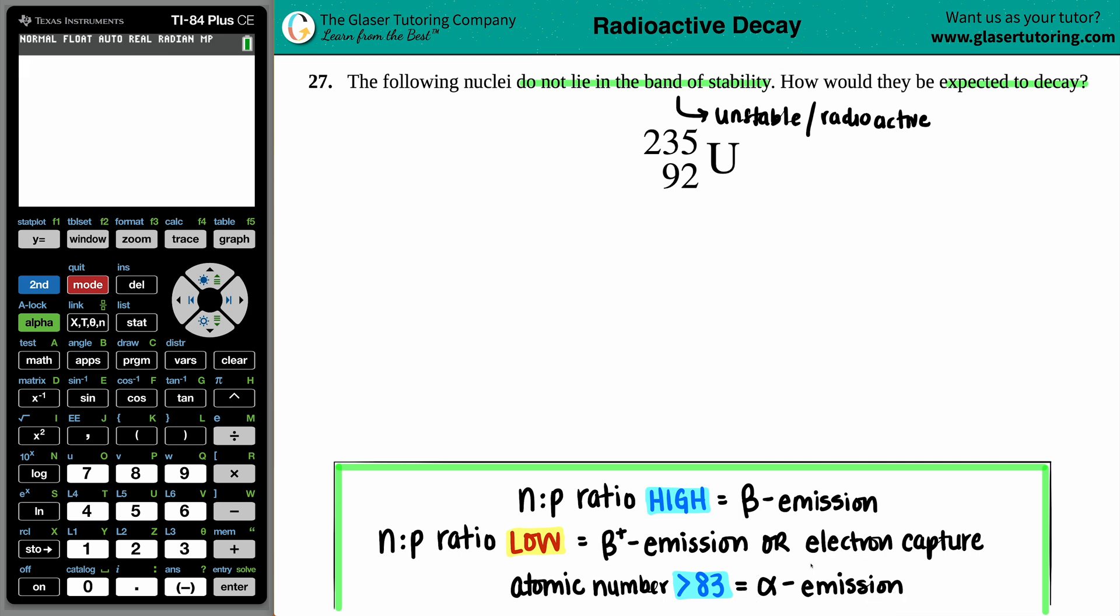And for uranium, uranium has an atomic number—and just know that the atomic number is always going to be the lower number of the two—the atomic number for uranium is 92. This is greater than the lucky number 83.